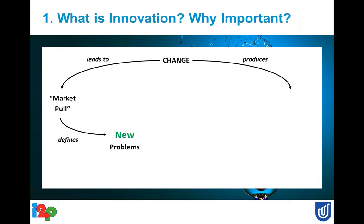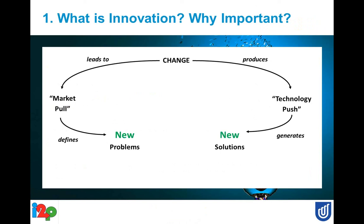On the other hand, change also produces what's called 'technology push.' Technology pushes inventions — for example, scientists and engineers invent better batteries that store more electricity, or scientists discovered gamma rays and X-rays. Marconi discovered radio waves about a hundred years ago, and economists developed the concept of credit — a financial instrument. All of those represent technology push.